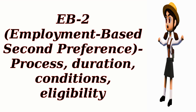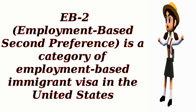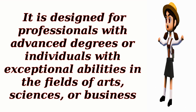EB-2, Employment-Based Second Preference — covering Process, Duration, Conditions, and Eligibility. EB-2 is a category of employment-based immigrant visa in the United States. It is designed for professionals with advanced degrees or individuals with exceptional abilities in the fields of arts, sciences, or business.